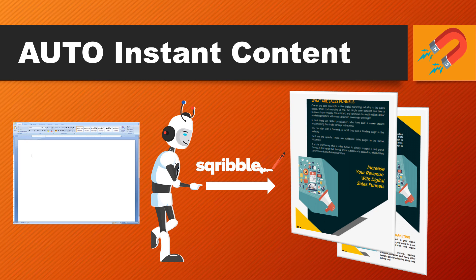This is a massive feature of Scribble. Scribble will allow you to populate your entire e-book with automatic instant content. This is the big one — they've got an incredible content engine, and with just a few clicks it's going to fill out your entire e-book.